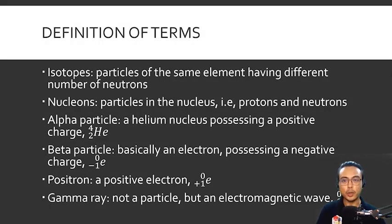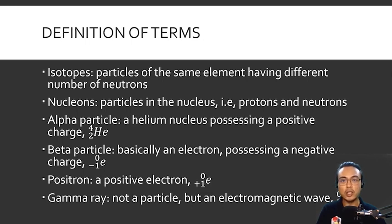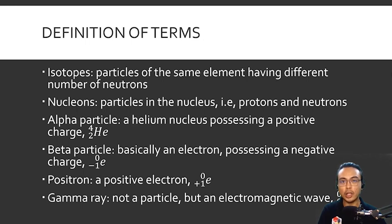Nucleons are defined as particles in the nucleus — that is, protons and neutrons. Electrons revolve around the nucleus. In nuclear reactions, it is the nucleons that are exchanged. This contrasts with chemical reactions, where electrons are transferred. In nuclear reactions, nucleons are transferred from one species to another — that is the biggest distinction between nuclear and chemical reactions.